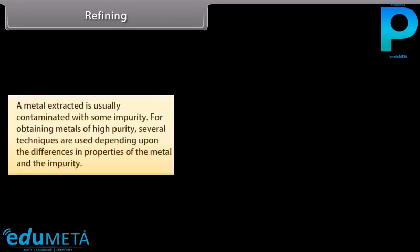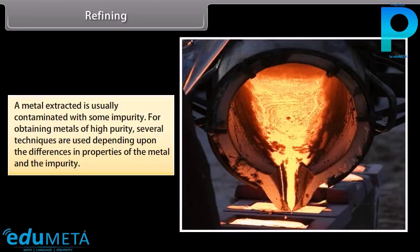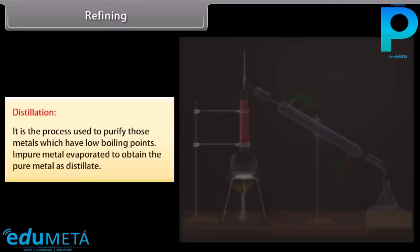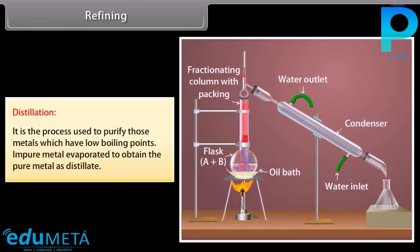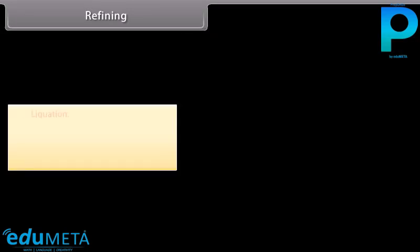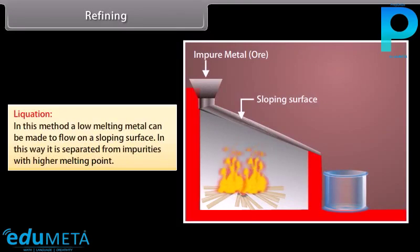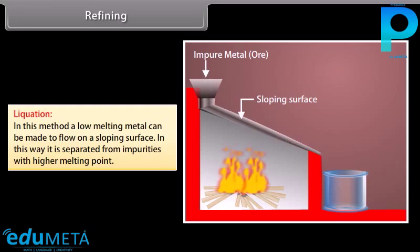Refining: A metal extracted is usually contaminated with some impurity. For obtaining metals of high purity, several techniques are used depending upon differences in properties of the metal and the impurity. Distillation is used to purify metals with low boiling points — impure metal is evaporated to obtain pure metal as distillate; for example, zinc and mercury. Liquidation: a low-melting metal is made to flow on a sloping surface, separating it from higher-melting-point impurities; for example, tin.